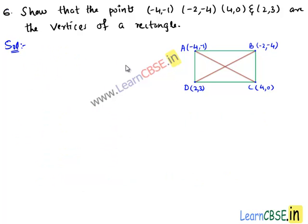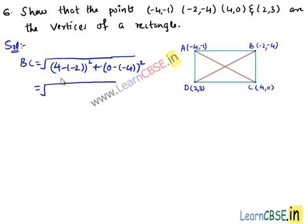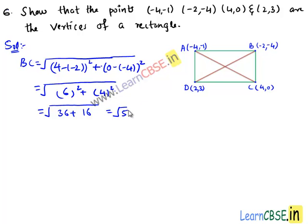Now let us find the length BC. BC equals the square root of (x₂ - x₁)² which is (4 - 2)² plus (y₂ - y₁)² which is (0 - 4)². That equals the square root of 6² plus 4² which is equal to the square root of 36 plus 16, which is equal to √52. Hence we got the length BC as √52 units.